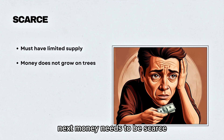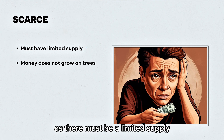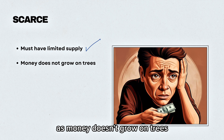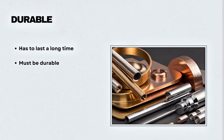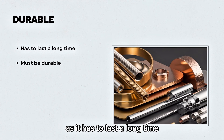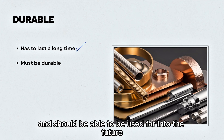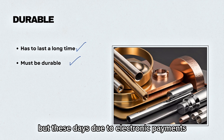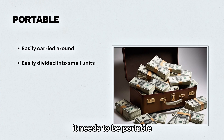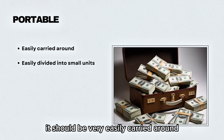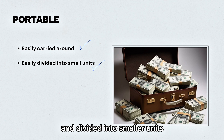Money needs to be scarce as there must be a limited supply, as money doesn't grow on trees. If it does, this will cause severe consequences like hyperinflation. Money needs to be durable as it has to last a long time and should be able to be used far into the future, though due to electronic payments this is less relevant today. It also needs to be portable — it should be very easily carried around and divided into smaller units.